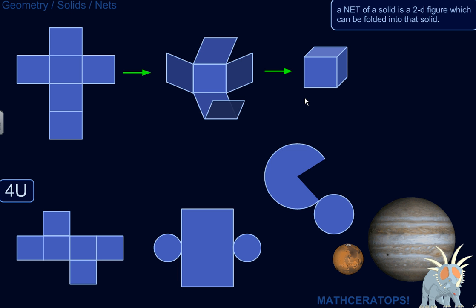So the net of a cube would be a 2D thing that's not a cube, but that could be folded into a cube. For example, this is a net of a cube. It's not the only possible net of a cube, but this is a net.